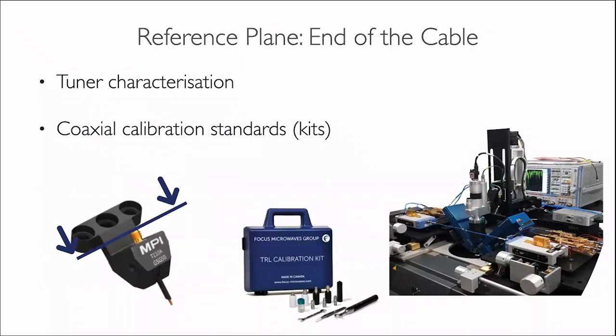For load pull system calibration, multiple types of calibration must be executed. First, cable-end calibration to characterize impedance tuners; then in-situ or on-wafer calibration to move the reference plane to the probe tip. For cable-end calibration, well-defined calibration kit standards provided by the vendor are used — easy to operate, connect to the cable end, giving reliable calibration results especially in the top frequency ranges.